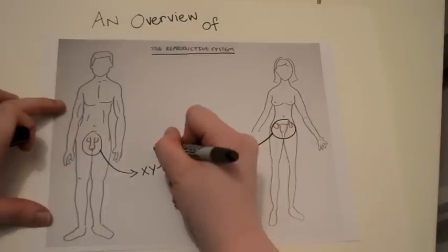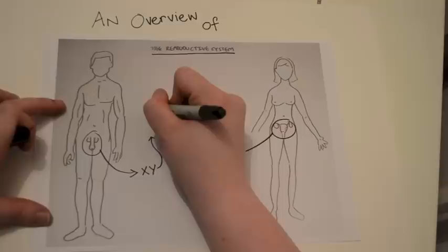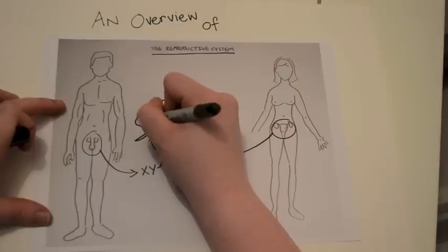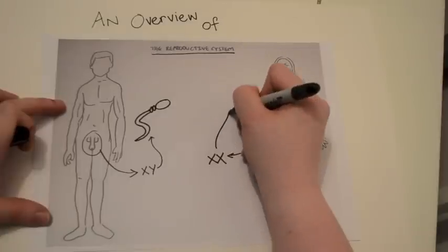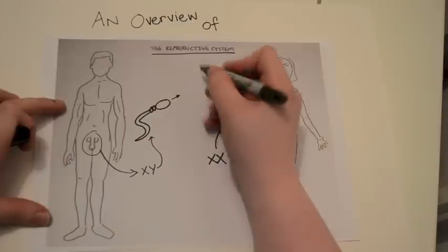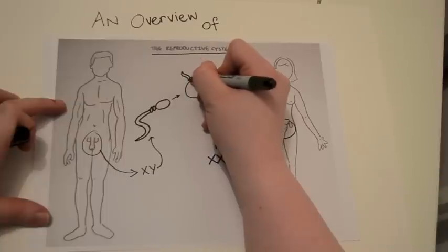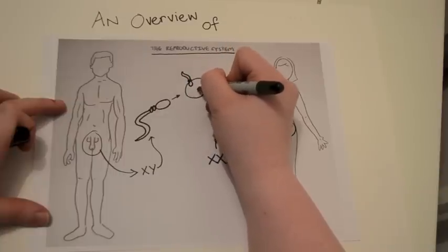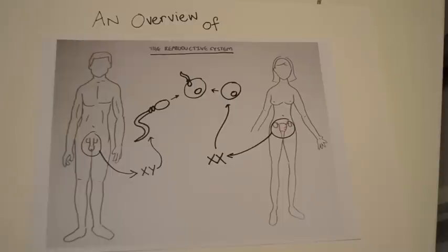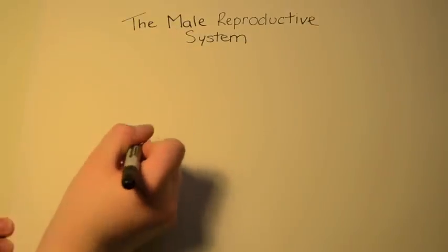The testes is responsible for producing the male gamete sperm. Sperm contain XY sex chromosomes. The female produces the ovum which contains XX sex chromosomes. In fertilization, the two gametes, one male and one female, fuse together to form a zygote which implants in the uterine wall and develops to become a fetus.